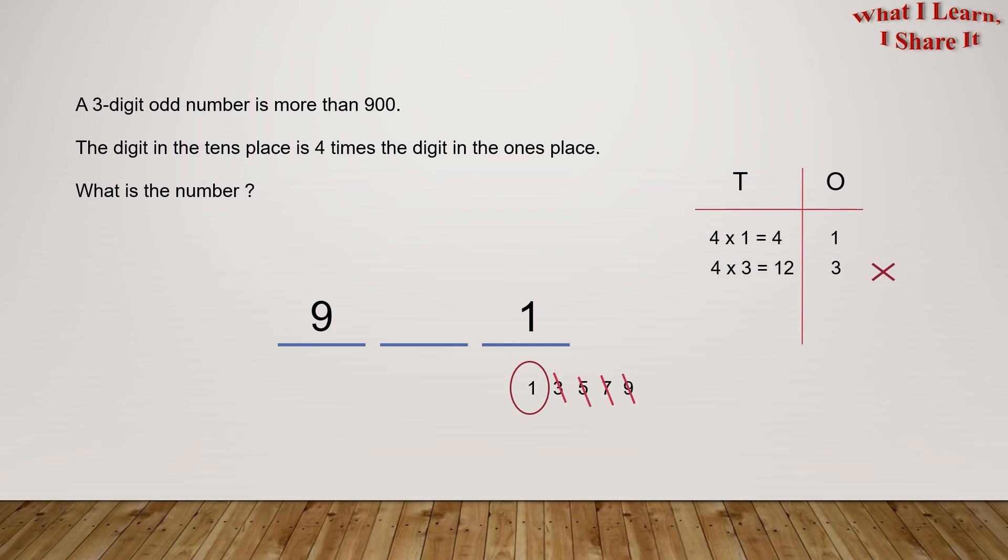Now we can see that if the number on the ones place is one, then the digit on the tens place will be four times one is four. Let's write four in the tens place. So the number is 941.